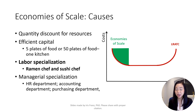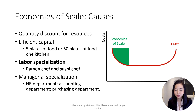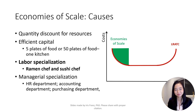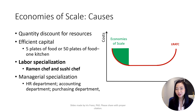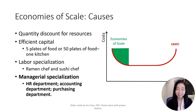As the restaurant expands, the owner can hire another chef. Now one chef can focus on sushi bar orders, while the other stays in the kitchen to make only ramen. The two chefs can work a lot more efficiently than just one chef. As a result, the long-run average total cost goes down.